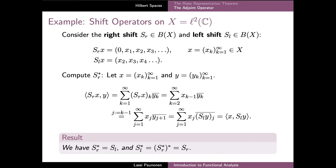We can now look at a couple of examples on computation of adjoint operators, and we will first consider the Hilbert space of square-summable sequences and study the right shift and left shift operators. These operators have the effect of shifting the elements of the sequence X either one step to the right or one step to the left according to their names. To compute the adjoint of the right shift operator S_R, we let X and Y be arbitrary sequences; the inner product of S_R X and Y is defined as the sum of the elements of these two sequences.